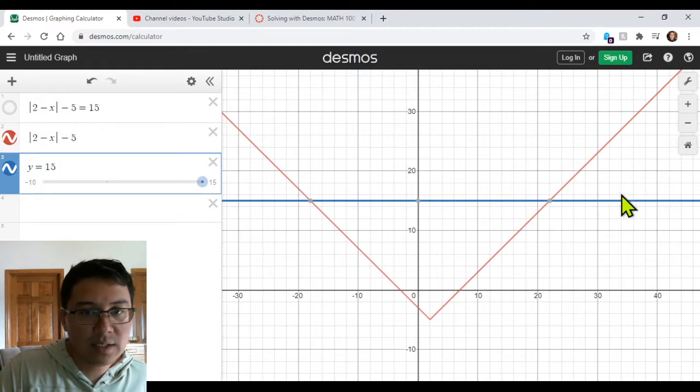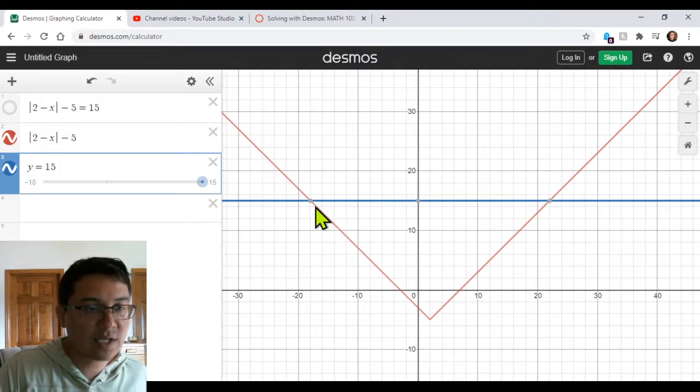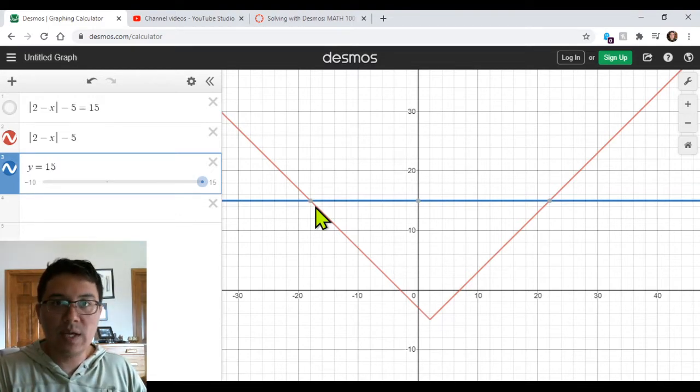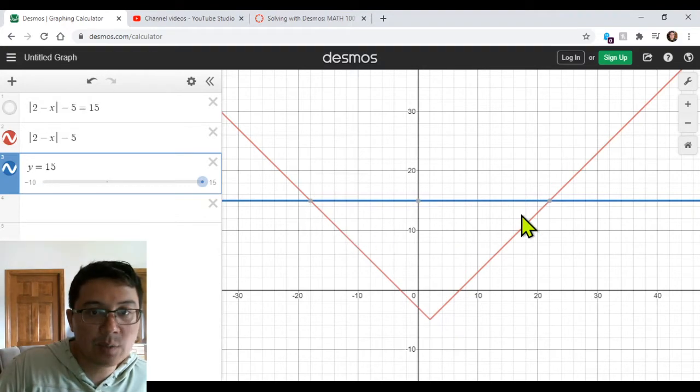Again, we're just looking for the intersection. So we've got two intersections. Just like when we were solving this algebraically, we ended up with two answers. When we reduced down the absolute value equations, when we do it graphically, we're also going to end up with two answers.